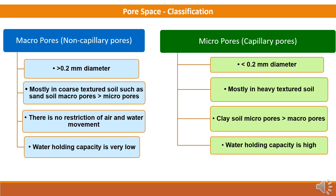Pore spaces are classified into two categories: macro pores, also known as non-capillary pores, and micro pores, also known as capillary pores. In macro pores, the diameter ranges more than 0.2 millimeters, while micro pores have a diameter of less than 0.2 millimeters. Macro pores are mostly found in coarse-textured soils like sandy soils, where macro pores are more compared to micro pores. Micro pores are mostly found in heavy-textured soils. In macro pores there is no restriction of air and water movement, while in micro pores water holding capacity is high.